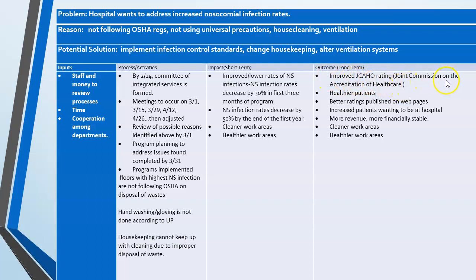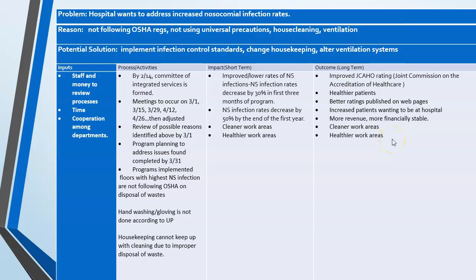For the long-term outcomes — three or more years — we could have improved JCO ratings, patients would be healthier, we'd have better ratings published on our web page, more people would want to come to the hospital which would mean more revenue and greater financial stability, and there would be cleaner and healthier work areas. That's what you'll be working on: just columns one, two, three, and the long-term outcomes column. The last column is your grant goals, so you'll copy and paste your grant goals into this document — hopefully by the time you finish your first paper we'll have a clear set of grant goals, as some of them may need to be tweaked.